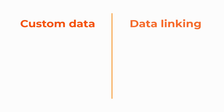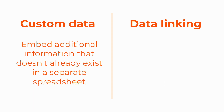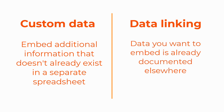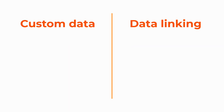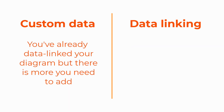First, let's cover when to use custom data versus data linking. You'll want to use custom data when you're building a new diagram, or you have a complete diagram but need to embed additional information that doesn't already exist in a separate spreadsheet. If the data you want to embed is already documented elsewhere, you'll want to use data linking to bring that information into your diagram. Or if you've already data linked to your diagram but there is more you need to add, you can use custom data to add it.